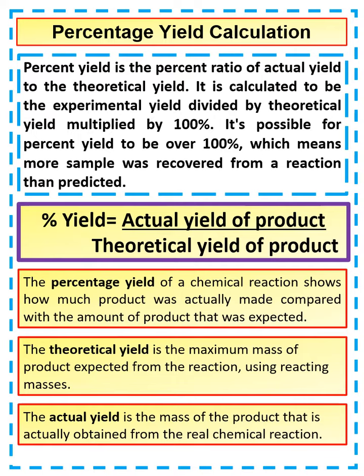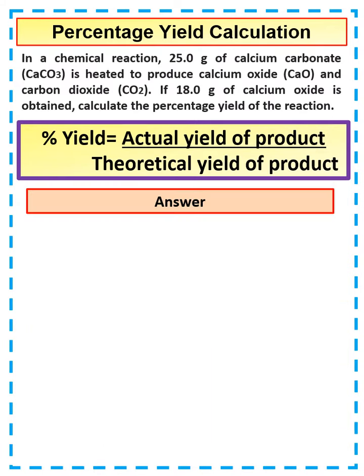Let's have a look at a quick question. This question about percentage yield is a little bit trickier. In the chemical reaction, 25 grams of calcium carbonate is heated to produce calcium oxide and carbon dioxide. If 18 grams of calcium oxide is obtained, calculate the percentage yield of this reaction.